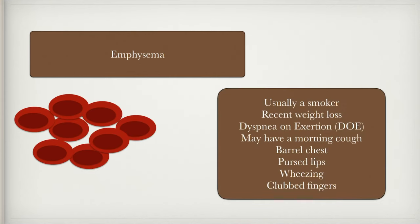Most emphysema patients you can almost always identify because they're walking around with a portable oxygen cylinder — at home they're on oxygen, not a lot, maybe half a liter to two liters, but they need it. They usually have a history of smoking, they're working harder just to breathe and burning through calories, so they may have some weight loss. They have DOE — dyspnea on exertion. When sitting on the sofa they're okay, but when they get up to walk to the mailbox or go upstairs, they get very short of breath.